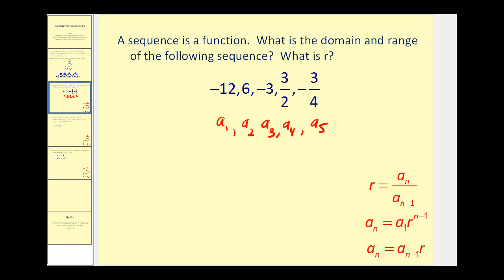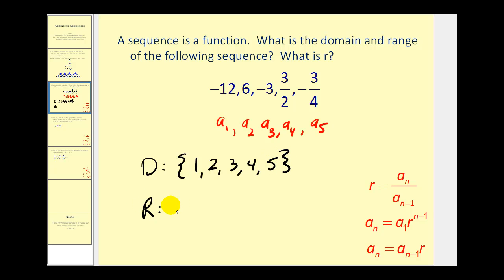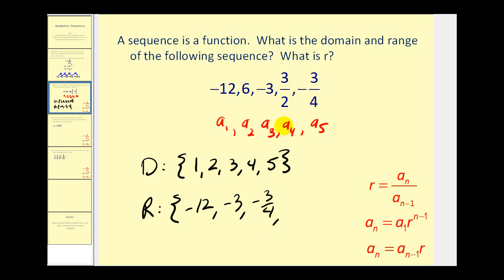So the domain would be one, two, three, four, five. And the range consists of the actual elements or numbers in the sequence: negative twelve, six, negative three, three halves, and negative three fourths. We normally write these in order from least to greatest, so the range is negative twelve, negative three, negative three fourths, three halves, and six.